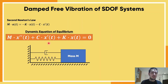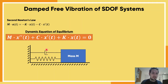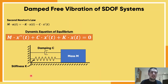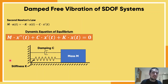Before we continue, I just want to show you this picture which appears in lots of textbooks. This little device is a damper. It's very common to see this in books. What it means is that in a dynamic system you have mass, stiffness, and damping.